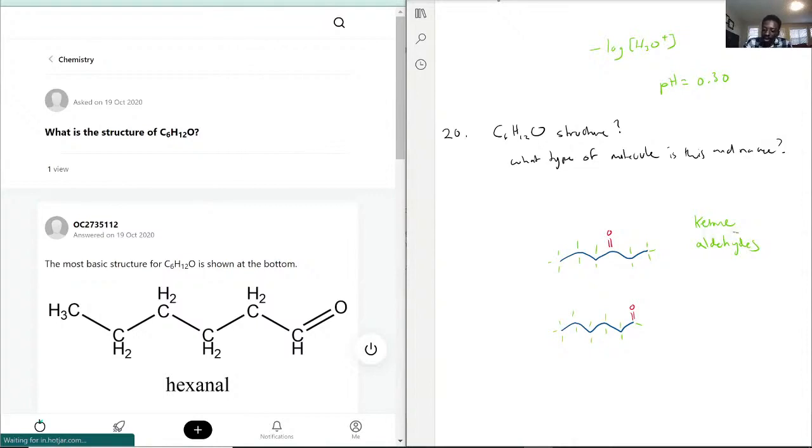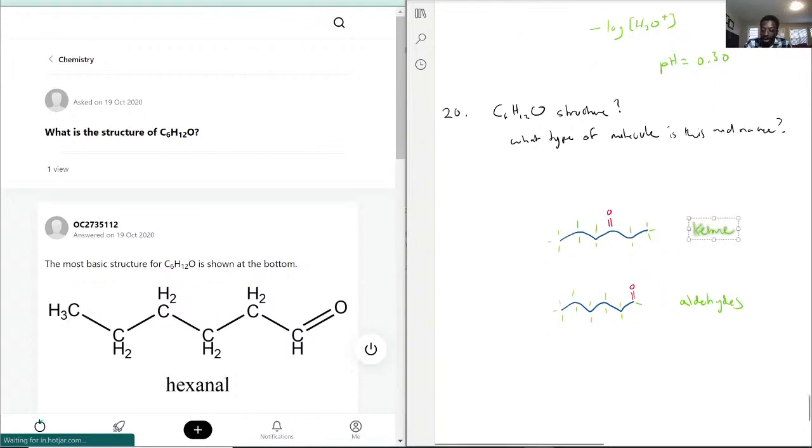This right here is the aldehyde, because that's a type of molecule where the oxygen bond is at the end. Ketones, the oxygen bond is inside the actual structure.